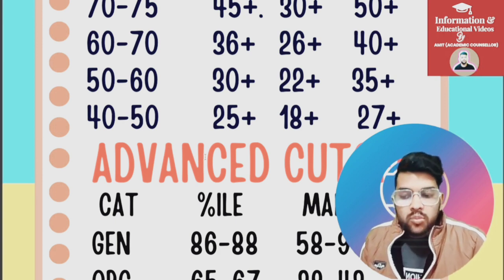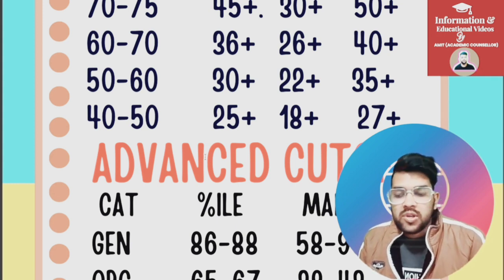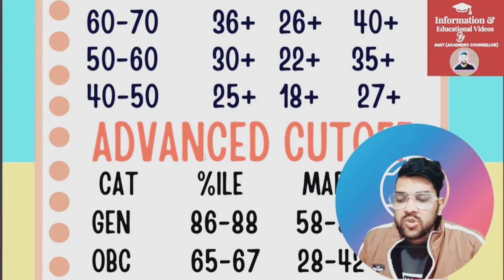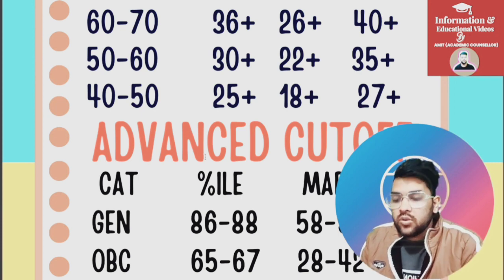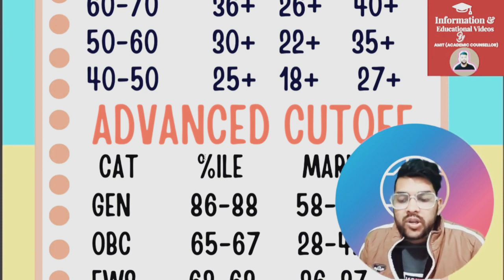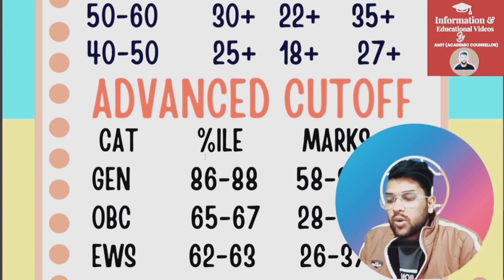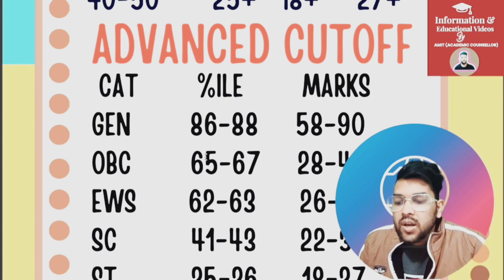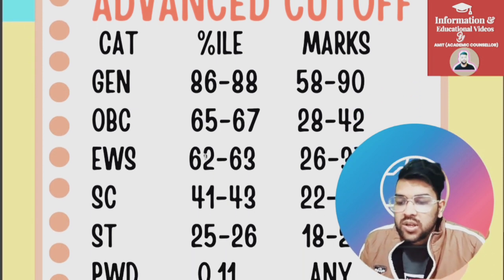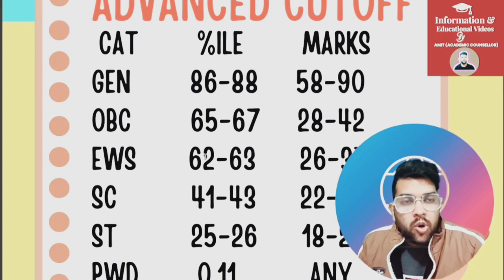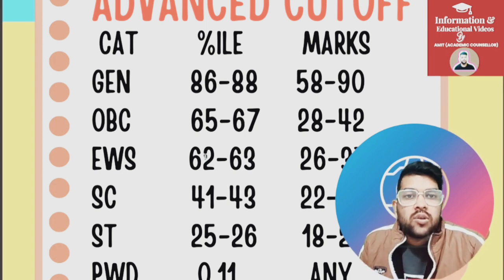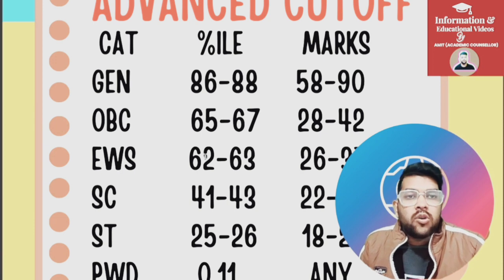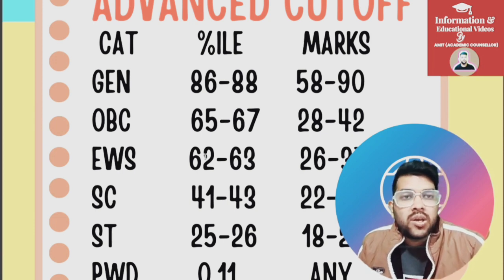For the General category, 58 to 90 marks corresponds to a percentile of 86 to 88 — not more than 88, as the number of general students is slightly decreasing while seats in JEE Advanced are increasing. For OBC, the percentile is 65 to 67 and marks are 28 to 42. For EWS, it is 62 to 63 percentile and 26 to 37 marks. For SC it is 22 to 38 percentile, for ST it is 18 to 27, and for PwD the cutoff percentile is extremely low at 0.11 or 0.03 — essentially if you reach the centre you qualify for Advanced.